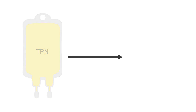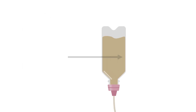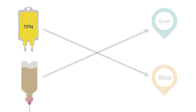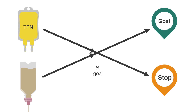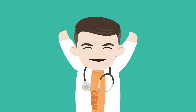For patients transitioning from TPN to tube feeds, once their tube feeds are infusing at around half of their goal rate, it's time to reduce their TPN to half goal. Once their tube feeds are approximately at goal, you can stop the TPN after their current half goal bag finishes. Now you know all about managing parenteral nutrition.